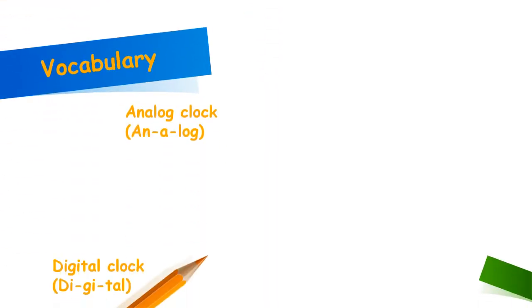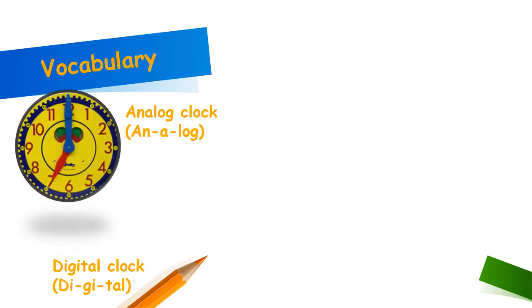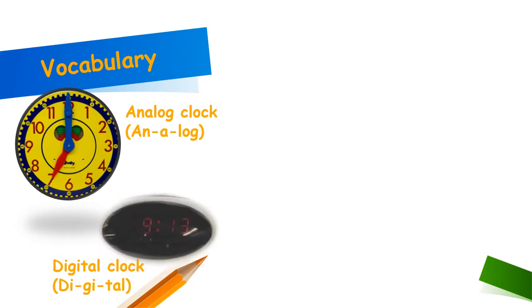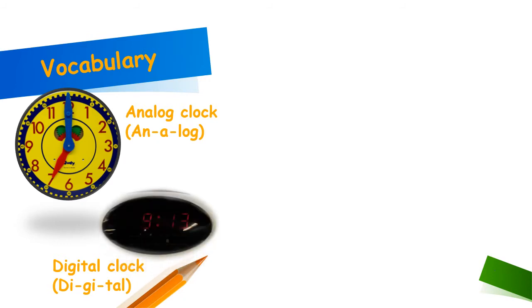Here are some vocabulary words. This is an analog clock — it kind of sounds like ants on a log. Analog. And then we have the digital clock. Digital.